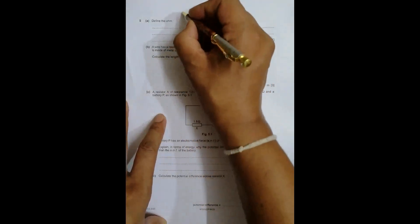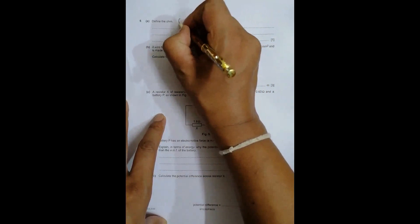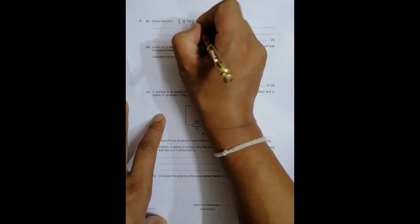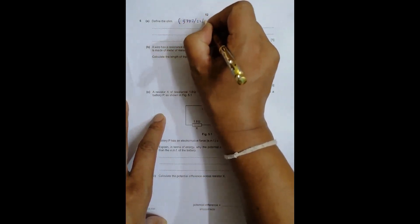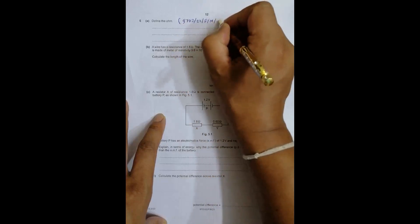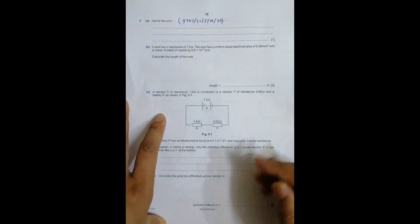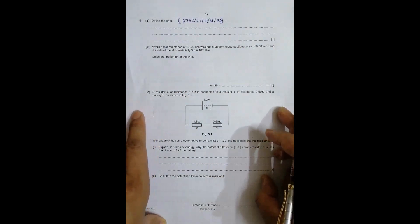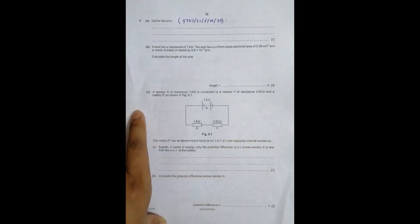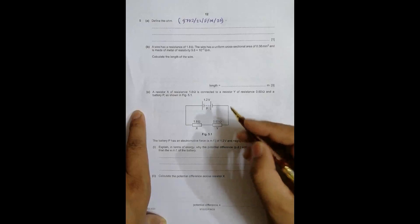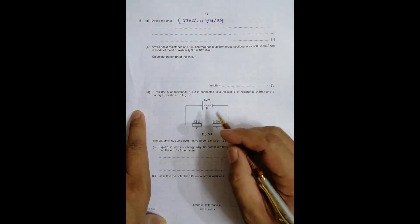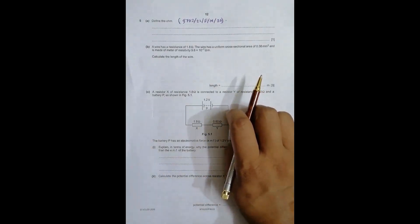Hello folks, this question belongs to 9702/22 FM 2020, the 2020 February-March session paper 22, question number 5. This question is concerned with the chapter on current electricity. The first question says define the ohm. Ohm is the SI unit of resistance and is simply volt per ampere.